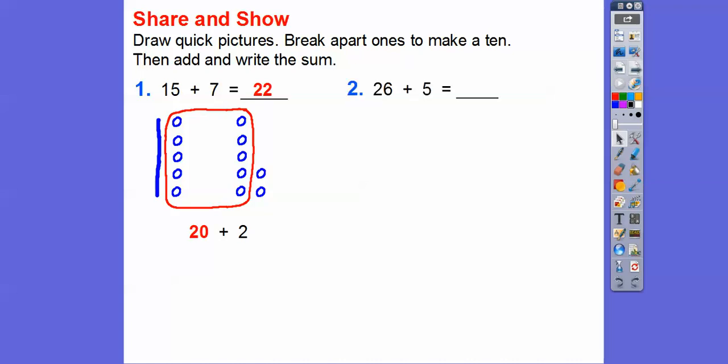How about this one? 26 plus 5. So there's 10, 20, there's 25, there's 26. 26 plus 5. And then what I'm going to do is take that group right there. So here's 5 and here's 5 more. That's 10. So this is 10, 20, 30. So this becomes 30 plus that leftover 1 right there. 30 plus 1 is 31.